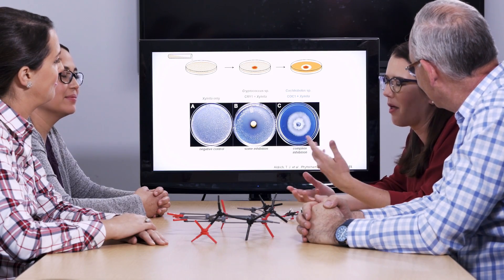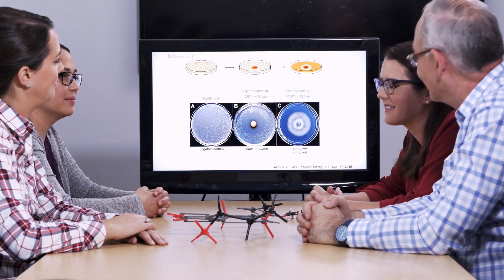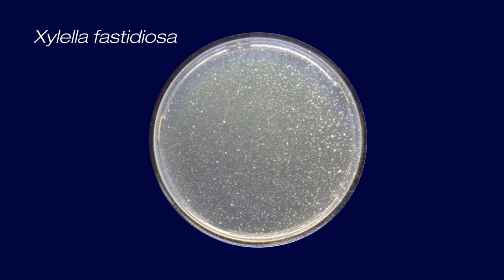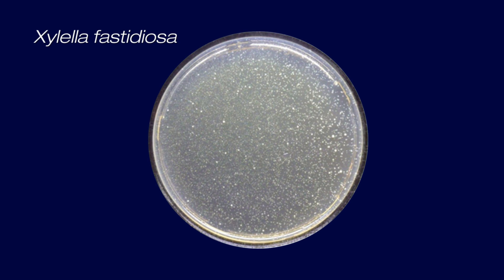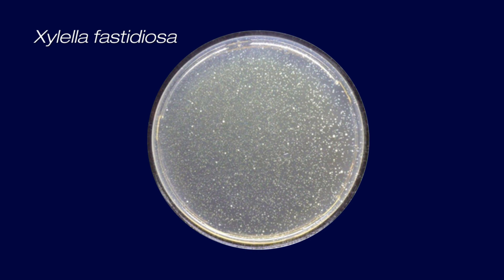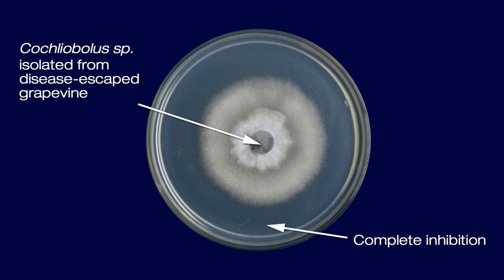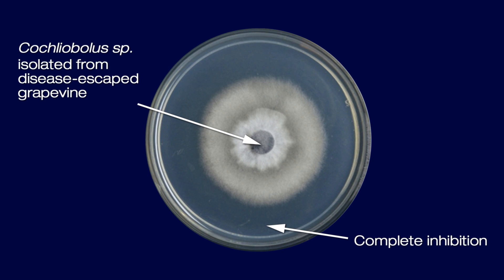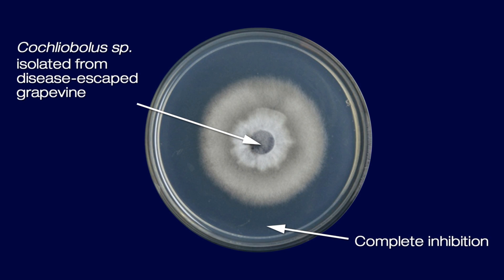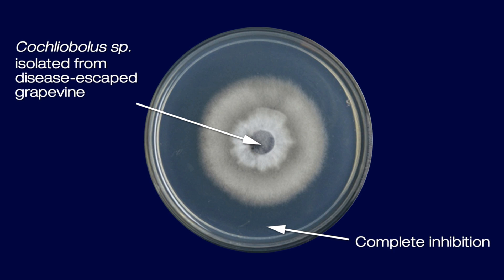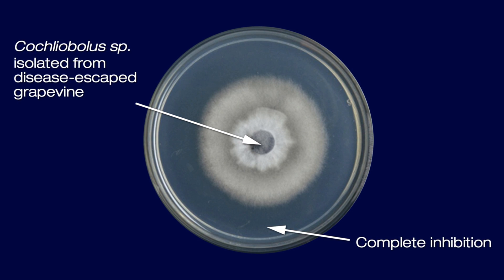As a natural products chemist, I was interested in isolating small organic molecules — chemicals produced by the fungus. To do that, the first thing we needed was a way to test for this activity. This is what Xylella looks like — a speckled appearance. But here you can see Xylella in the presence of Cochliobolus, and there is no Xylella to be found on the plate. The Cochliobolus completely inhibited the growth of Xylella, so we were very interested in that fungus in particular.